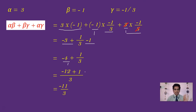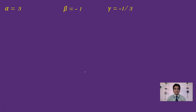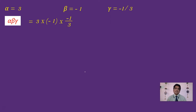Now let us find the product alpha·beta·gamma. That is 3 × (-1) × (-1/3). The 3 and 1/3 cancel, and (-1)×(-1) = +1. So alpha·beta·gamma = 1. We have now computed: alpha+beta+gamma = 5/3, alpha·beta+beta·gamma+alpha·gamma = -11/3, and alpha·beta·gamma = 1.